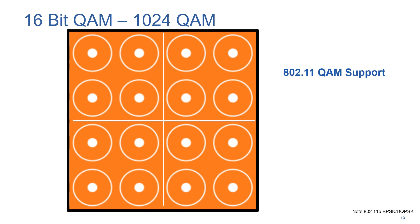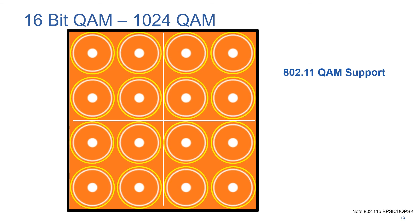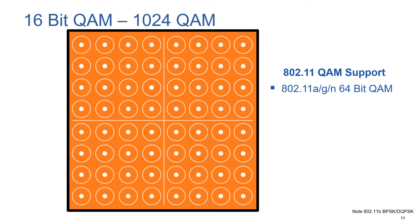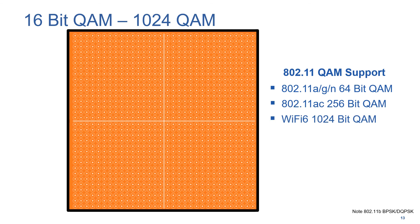QAM is another important component to help improve the overall throughput. In the past, the maximum QAM rate on 802.11ac or Wi-Fi 5 was 256-QAM. But now we've really increased it by moving all the way up to 1024-QAM. Of course, we need a very good signal-to-noise ratio to pull those individual symbols into the receiver. Moving to 1024-QAM is obviously going to be quite challenging — we need good receivers to distinguish the signal and pull it in successfully. Remember, each one of these points represents a particular phase and amplitude of the signal. By changing the phase and changing the amplitude, we encode different symbol values.